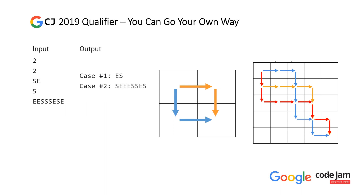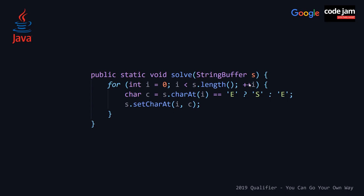I'm sure there's a rigorous mathematical proof that shows why this works, but I'm not going to jump into that here. I'm just going to go to the code solutions. Our first solution is in Java. Here, we've done the very imperative way of solving this. We are passing a StringBuffer s, which gives us the ability to mutate our string buffer because strings are immutable in Java.